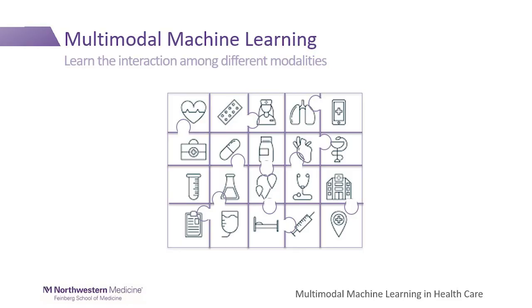We process different information quite differently, and we want our model to mimic our human ways of thinking about data. That's the difficulty in this research area. The data are quite different — like pieces of a jigsaw puzzle — and the most important part is the interaction among different types of data, like the interlocking mechanism of a jigsaw puzzle. My research is to learn the interaction of different modalities of data and try to build a model to help doctors make decisions.